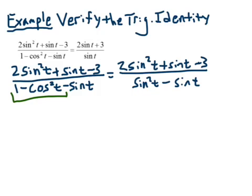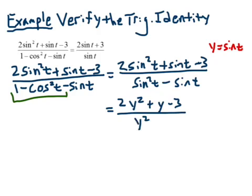Now we have everything in terms of sine here, so we might notice that on top we have a quadratic. We've got 3 terms so that gives us a quadratic trinomial. A useful tool right now might be to substitute, so let's try a little substitution. We're going to let y equal sine of t, and so our next step gives us 2y squared plus y minus 3 all over y squared minus y.